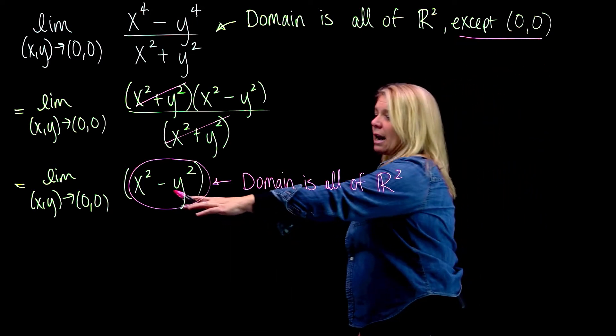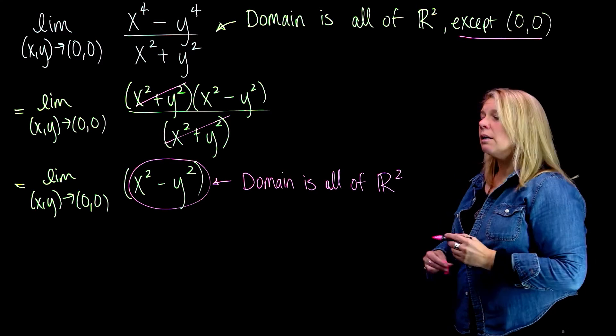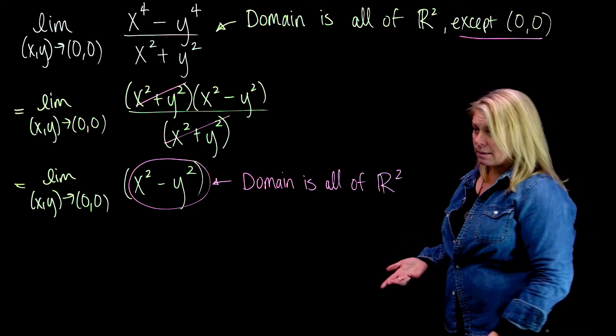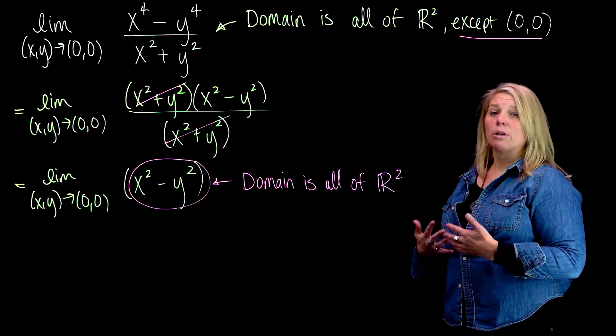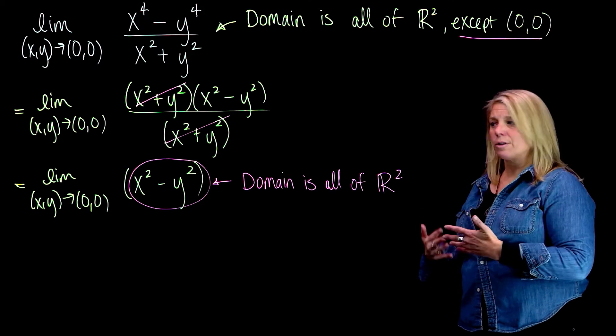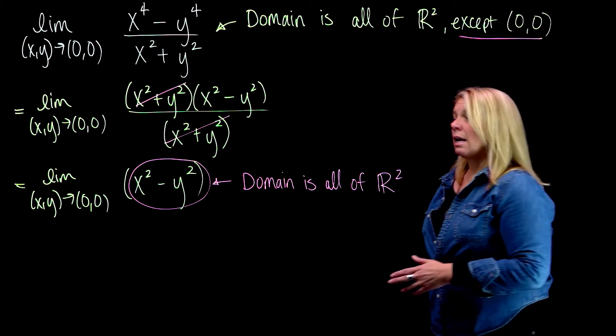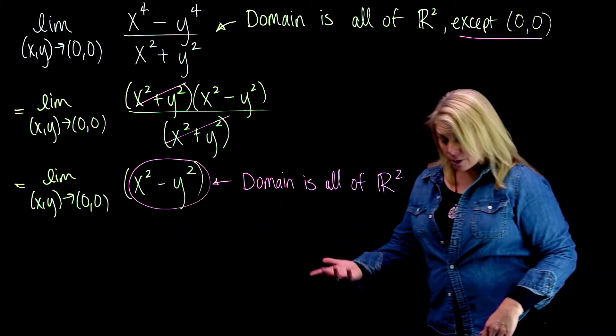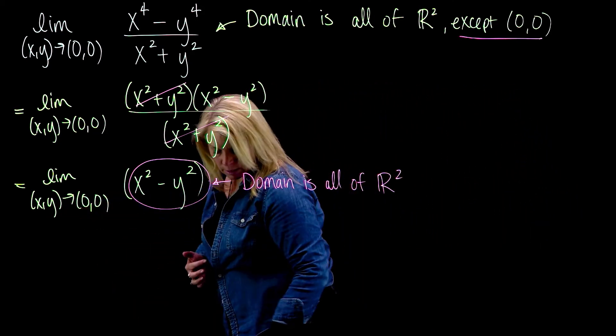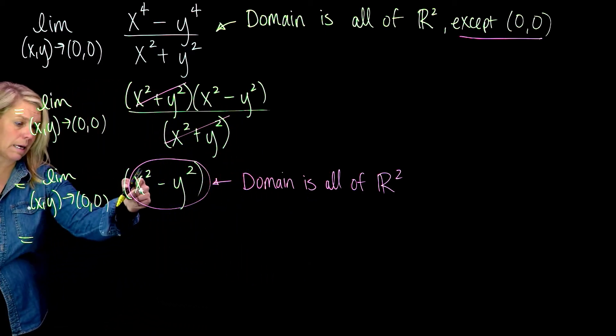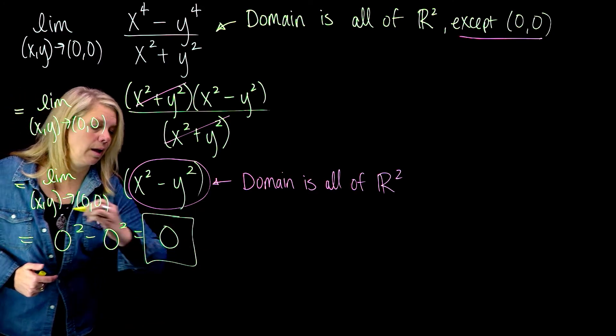This last function that I have, the same as the original function everywhere except the origin, is a nice function. I can just substitute in (0,0) to finish this limit question. Remember, that's not really what limits are asking about, but sometimes you can use that substitution shortcut as long as your function is a rational function and the denominator is not zero at the point that you are approaching. We can finish this by just plugging in zero, and that's what we get for our limit.